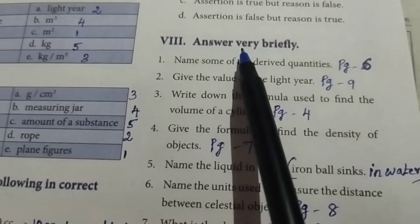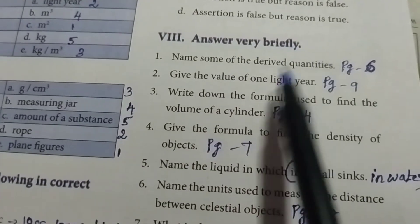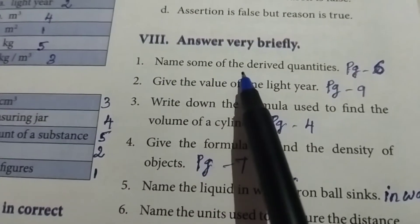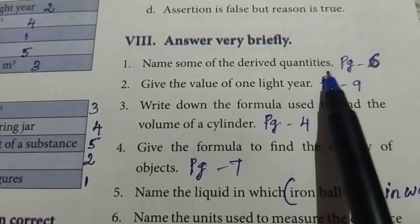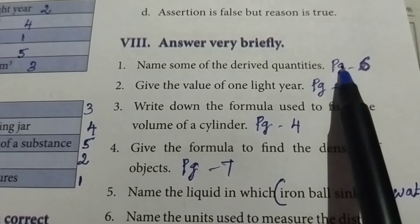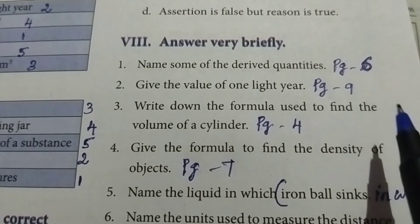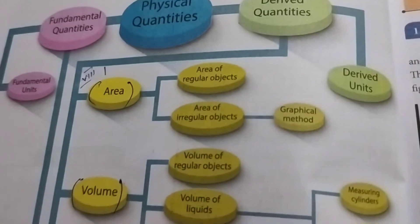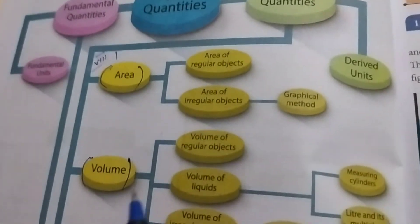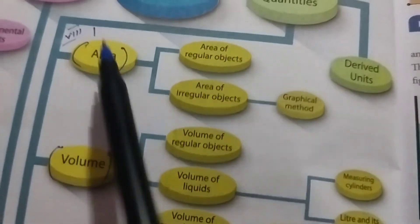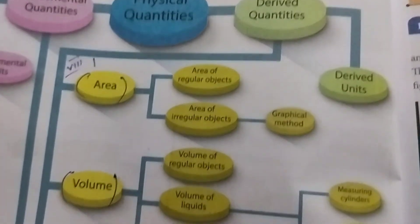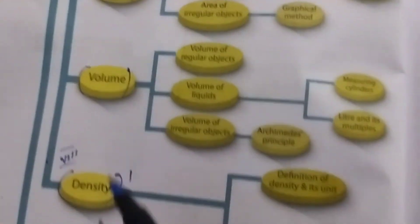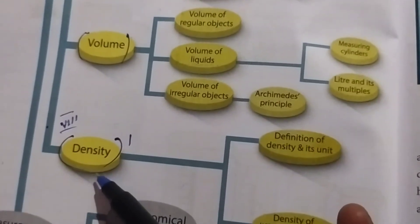Then Roman Letter 8: Answer very briefly. First one: Name some of the derived quantities. Take page number 6. Page number 6 says the answer is: area, volume, and density.